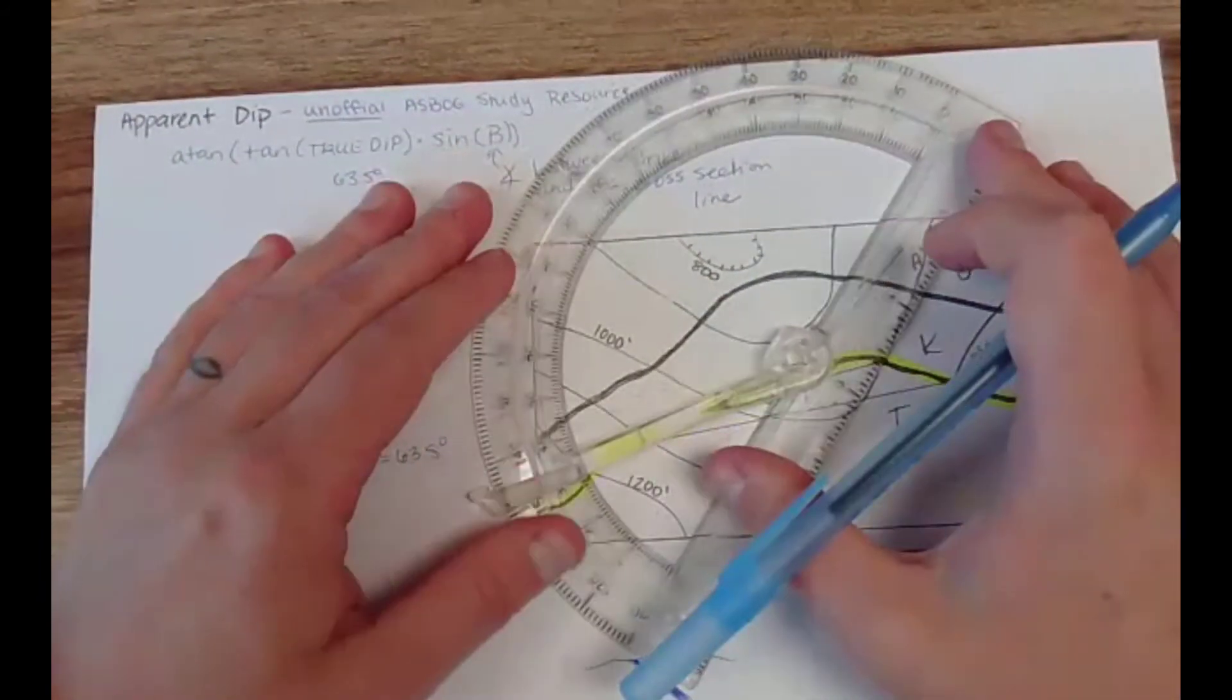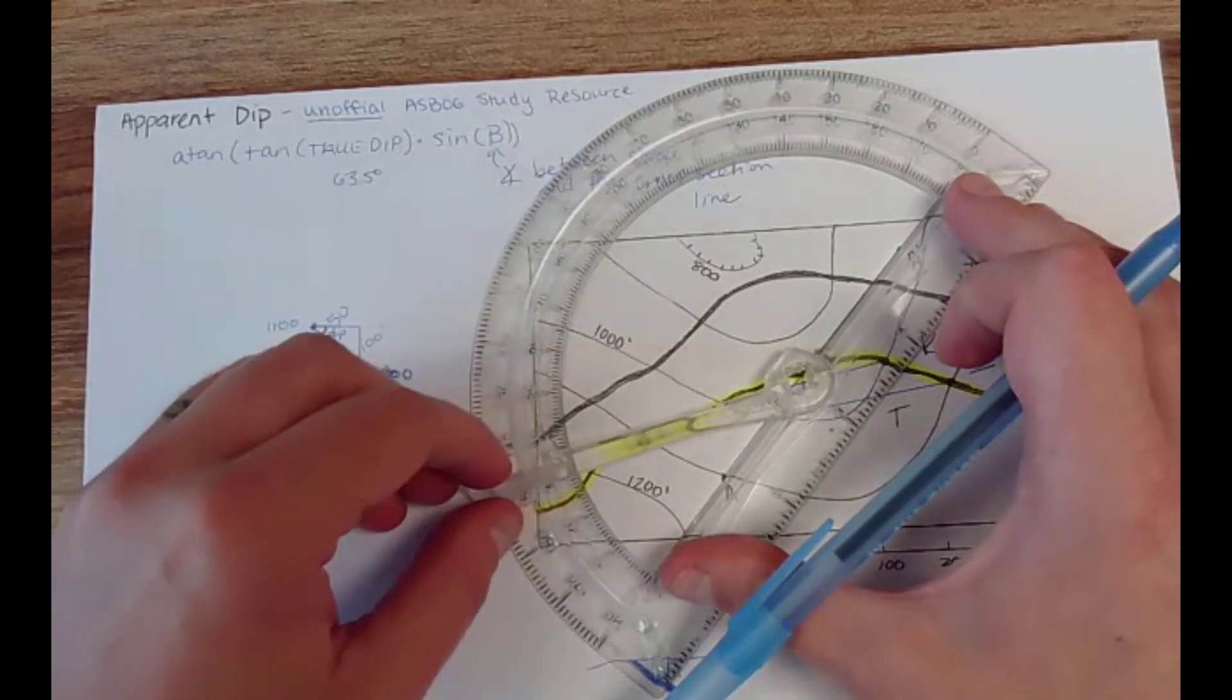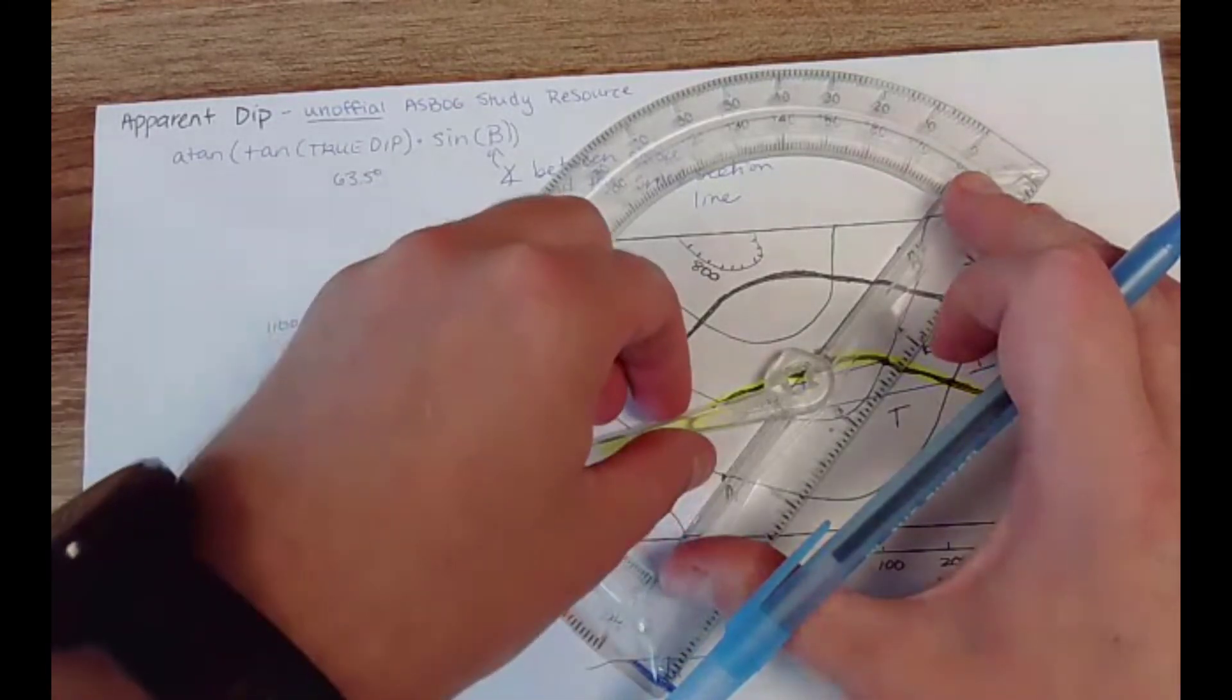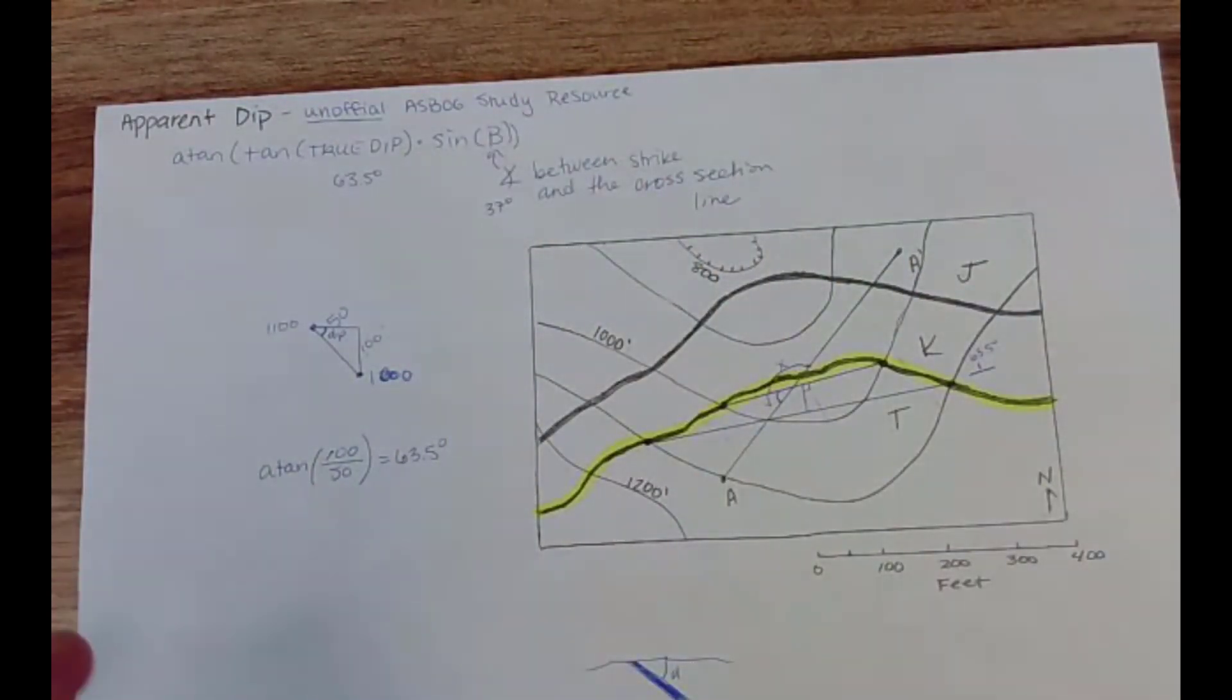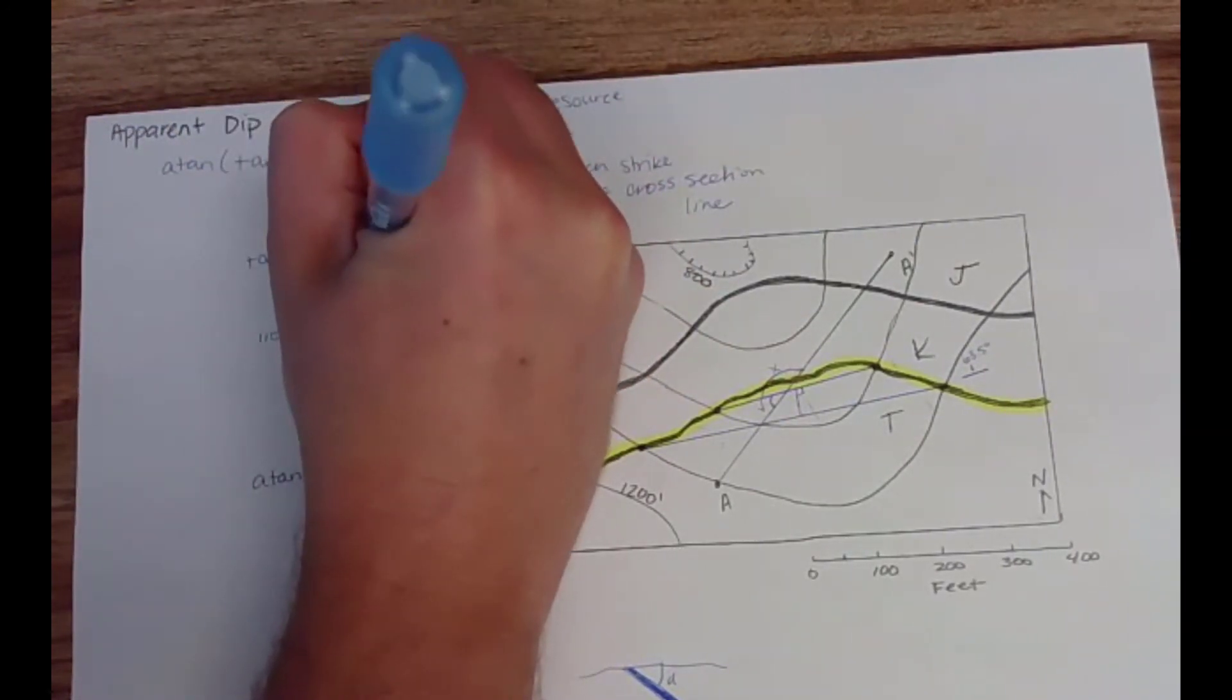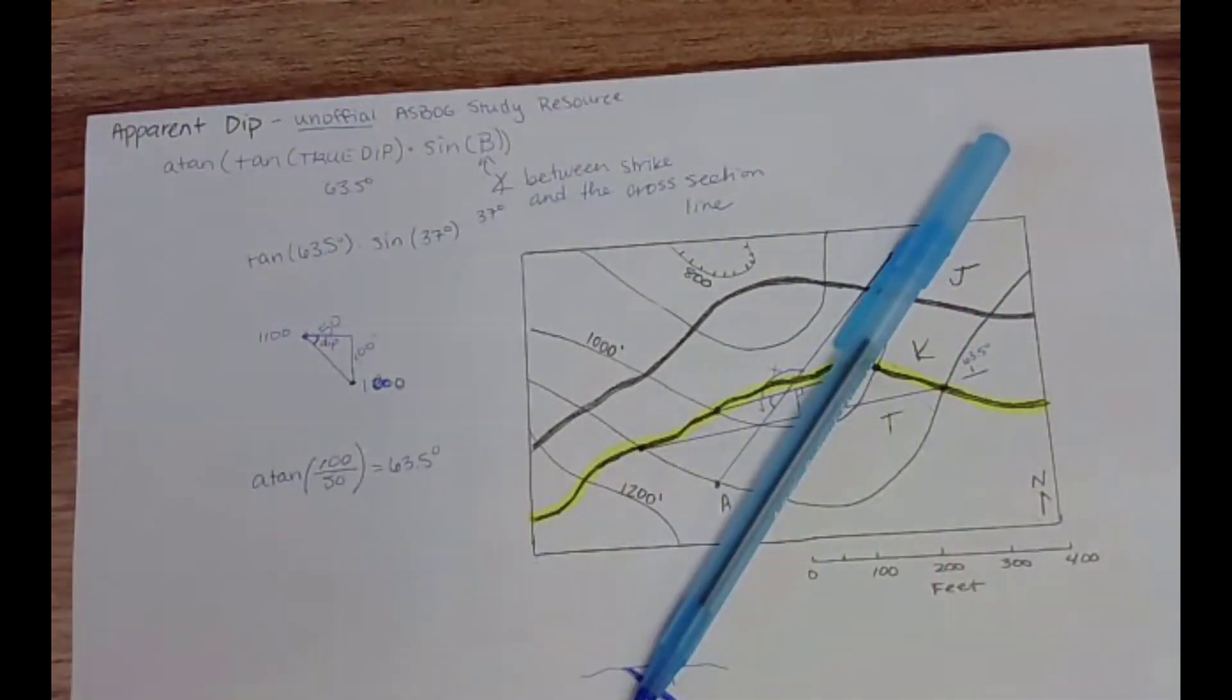All right, so let's line this up and figure out what our angle is. I get 37 degrees for beta. And so now we're going to do tangent of 63.5 times sine of 37 degrees.